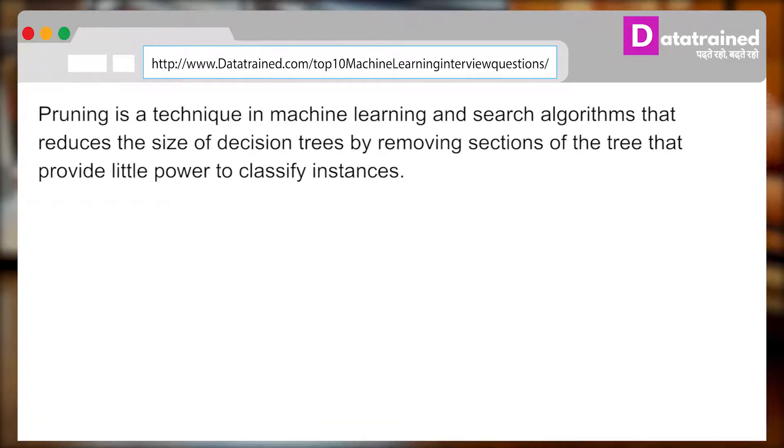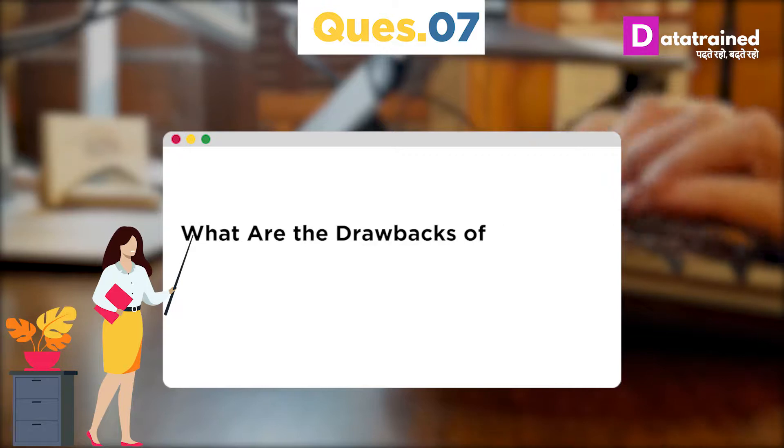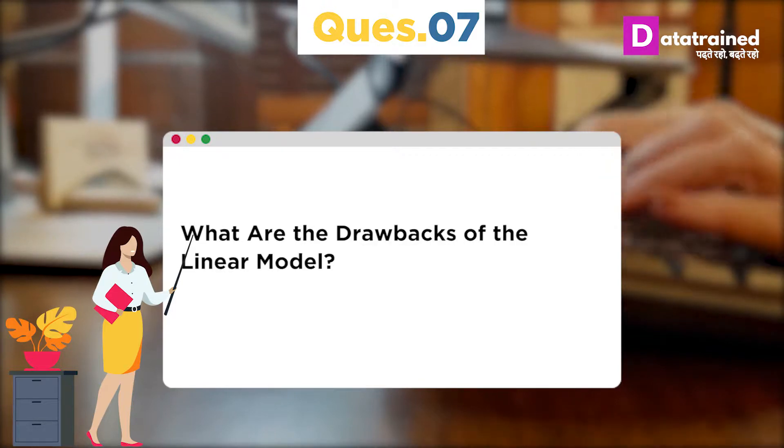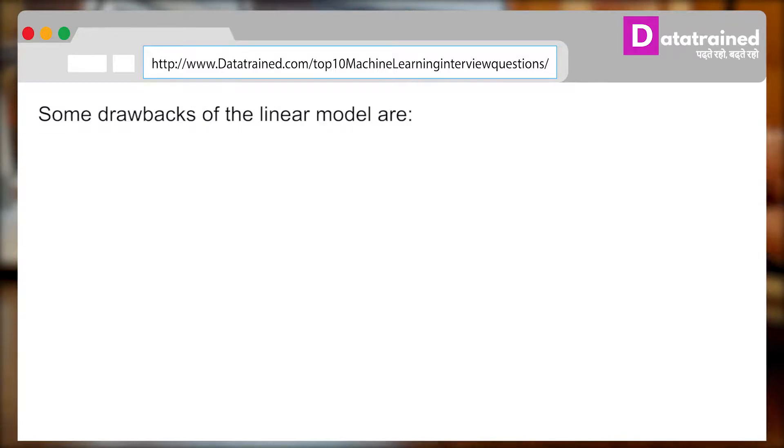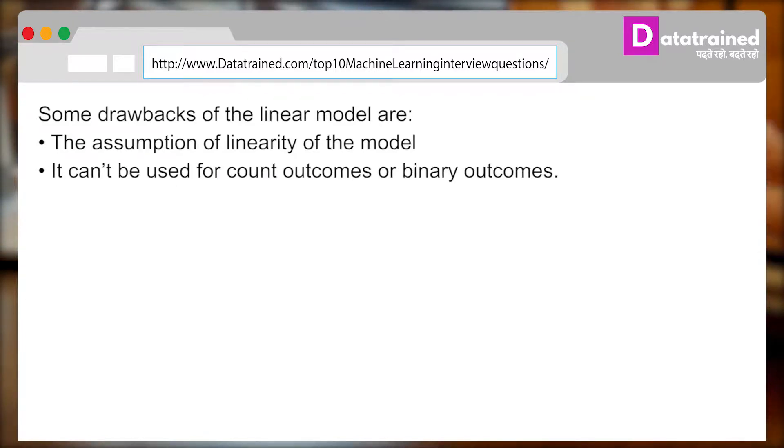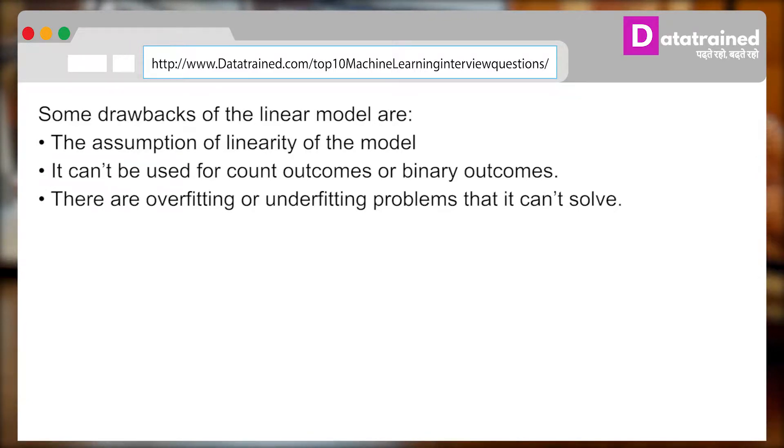Next, your interviewer may ask you: What are the drawbacks of the linear model? Where you can answer: Some of the drawbacks of the linear model are: The assumption of linearity of the model. It can't be used for count outcomes or binary outcomes. There are overfitting or underfitting problems that it can't solve.